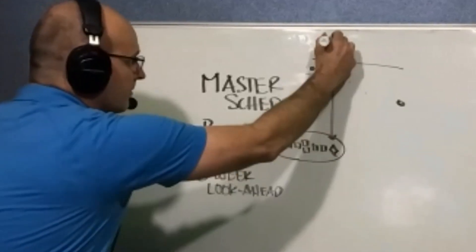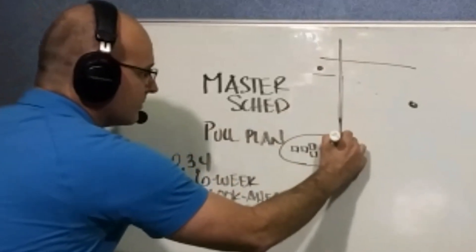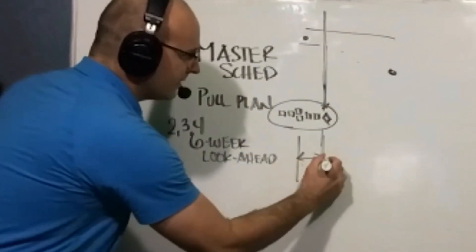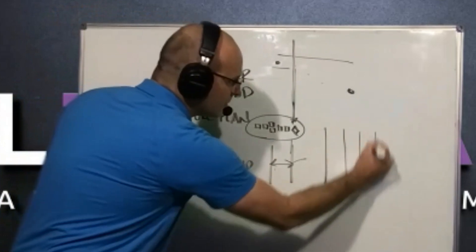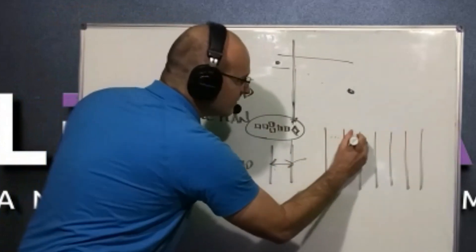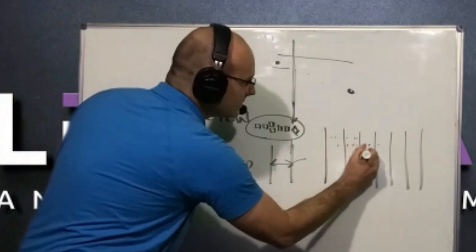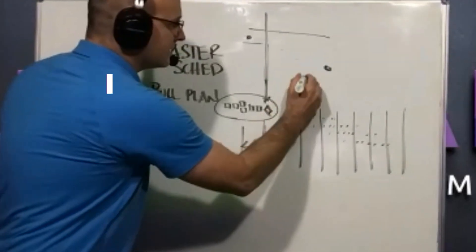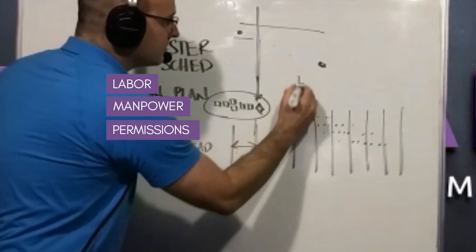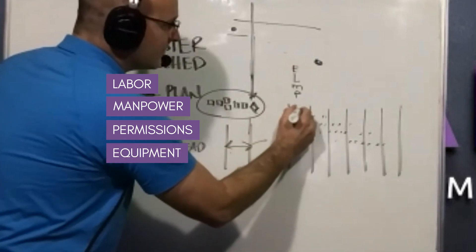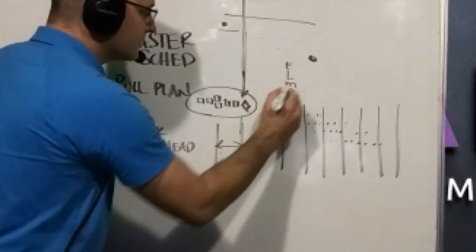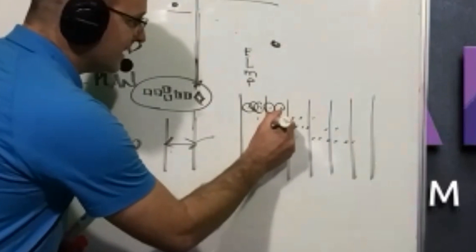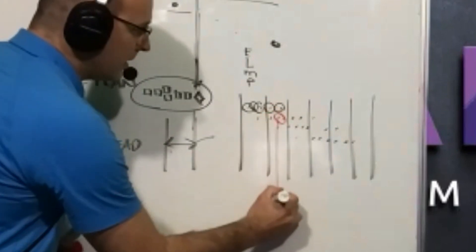From your master schedule and confirmation of the sequence in your pull plan, you filter out six weeks of your schedule. Inside that, you'll have certain activities — week one through six — and you ask: is this activity ready? Does it have the labor, the manpower, the permissions, the equipment, the materials? You ask that for each activity, and if the answer is no, then that is a possible roadblock.